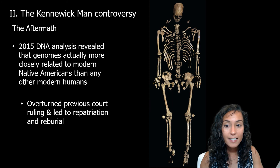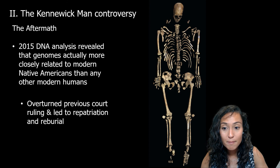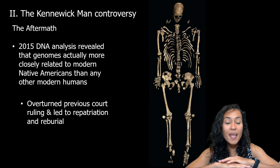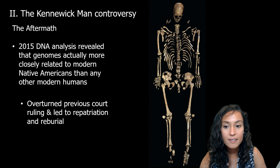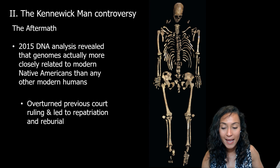In 2015, DNA analysis of the Kennewick Man remains revealed that his genome was actually more closely related to modern Native Americans than any other modern humans in existence, officially overturning the previous court ruling that the remains were not culturally affiliated with Native Americans and giving the Umatilla tribes the right to rebury the Kennewick remains.